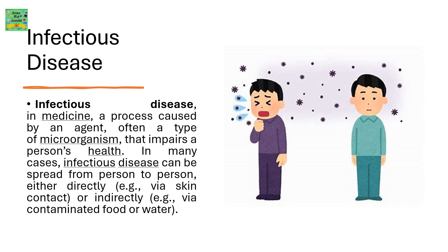Infectious Disease: In medicine, it is a process caused by an agent, often a type of microorganism, that impairs a person's health. In many cases, infectious disease can be spread from person to person, either directly, e.g. via skin contact, or indirectly, e.g. via contaminated water or food.